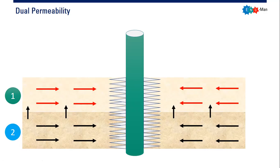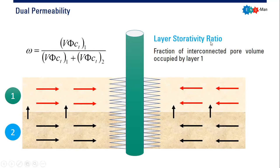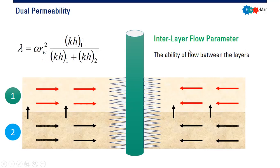Within this system we have several important parameters. The first is the layer storativity ratio, omega, which is the fraction of the total interconnected pore volume occupied by layer one. It is defined as the storativity (porosity times compressibility times thickness) of layer one divided by the total storativity of both layers.